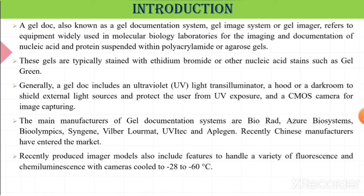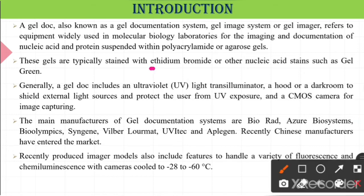The gel documentation system is mainly used in the molecular biology laboratory for the imaging and documentation of nucleic acids and proteins suspended within polyacrylamide or agarose gel. To separate proteins or nucleic acids from a sample, agarose gel electrophoresis is used, and in this electrophoresis ethidium bromide or gel green stain is used. After finishing the run, we use the gel documentation system to see the bands — UV light is used as the transilluminator so we can easily see the bands.